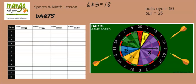Then they spin again for the next dart. Let's say they get just a 15 with no multiplier. On the third spin, let's say they hit the bull, which is worth 25 points with no additional spin needed. They add up the three scores — 18, 15, and 25 — to get a total, and then subtract that from 301 to get their new score of 223.